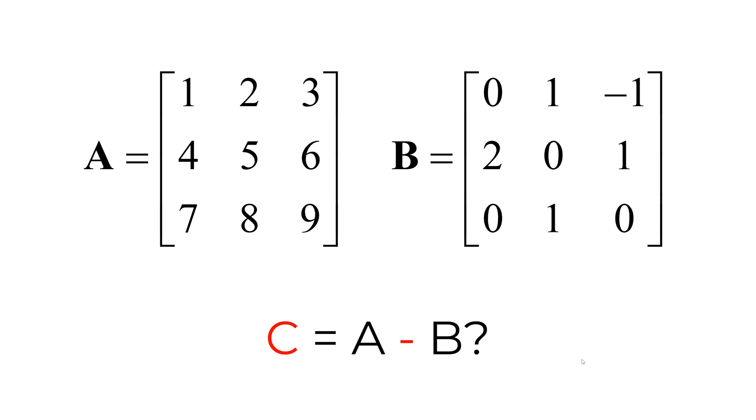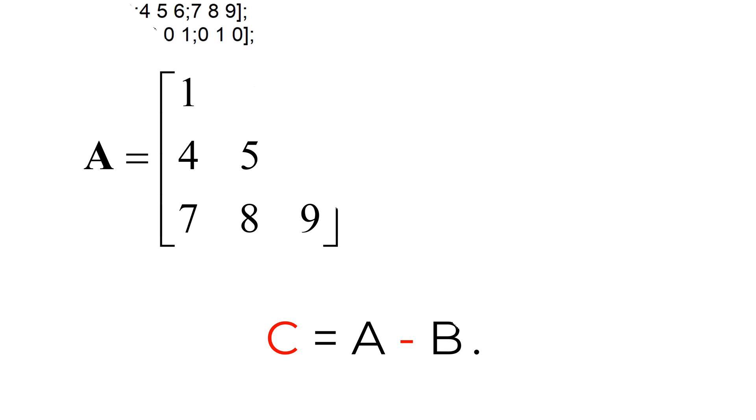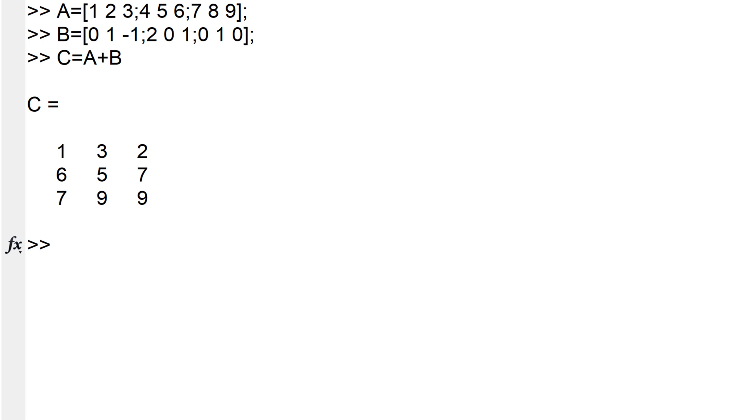What if you want to subtract matrix B from matrix A? Since we already created matrices A and B before, we can simply type C equals sign followed by A minus B. The resulting matrix C is shown below. The elements in the matrix C are element-wise subtraction between matrices A and B.